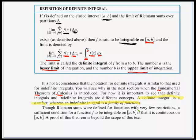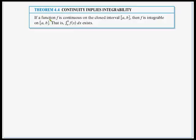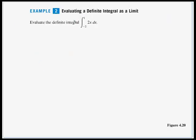Though Riemann sums were defined for functions with very few restrictions, a sufficient condition for f to be integrable on the interval from a to b is that it is continuous on that interval. A proof of this theorem is beyond the scope of our textbook. Theorem 4.4 — Continuity implies integrability: if a function f is continuous on the closed interval from a to b, then f is integrable on that interval; that is, the integral from a to b of f of x dx exists. If you've been confused by this material, let's go through these examples and it'll get clearer.